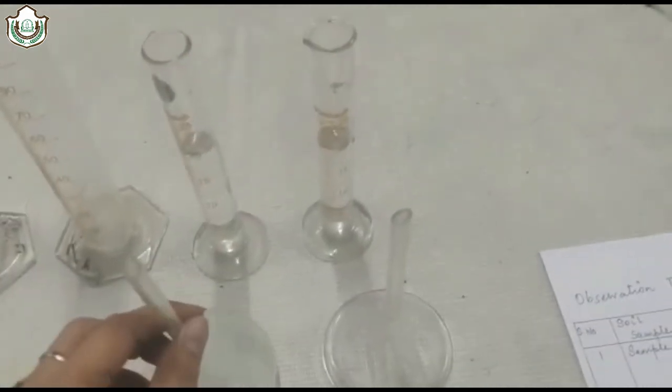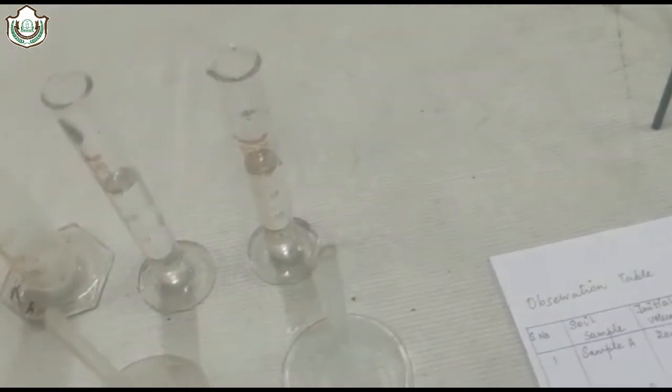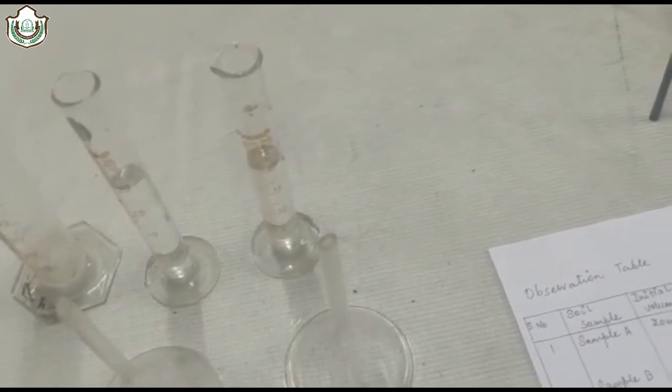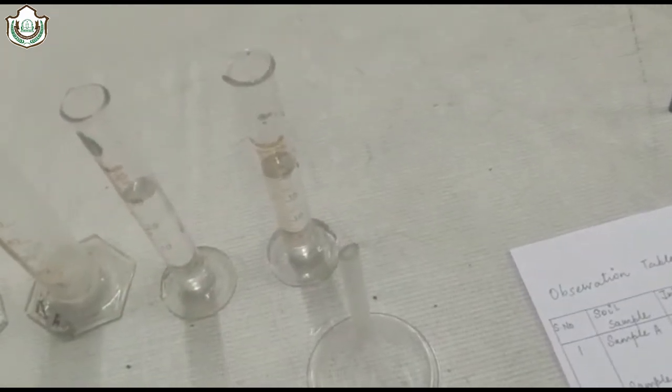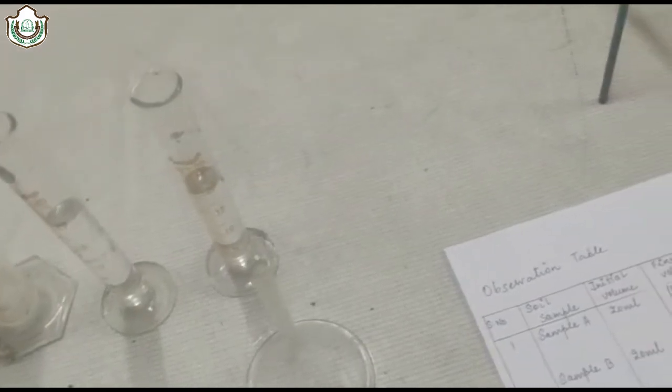Now take two measuring cylinders and two measuring cylinders filled with water, funnels, and filter paper. Now first of all, we have to take this soil.